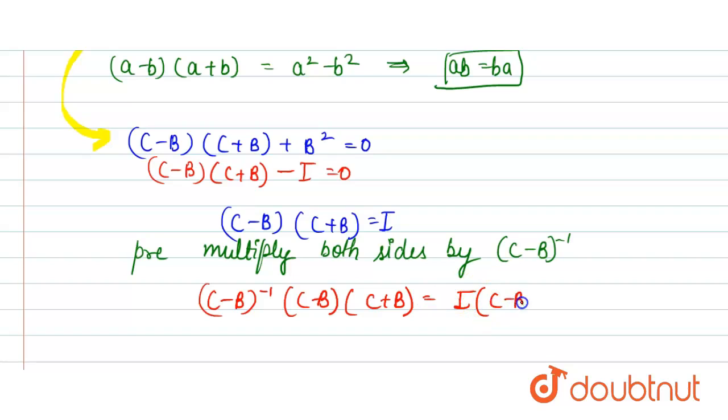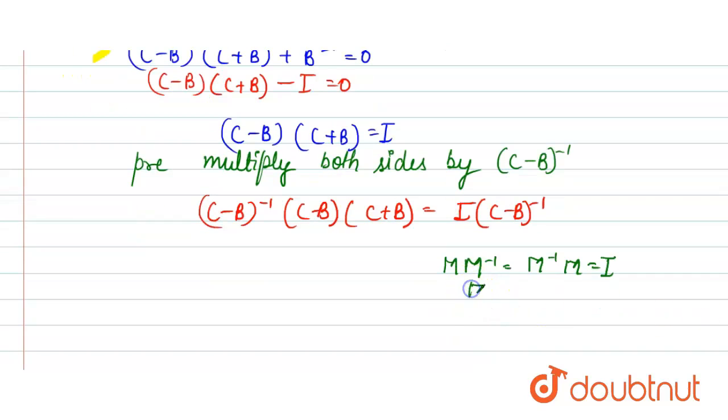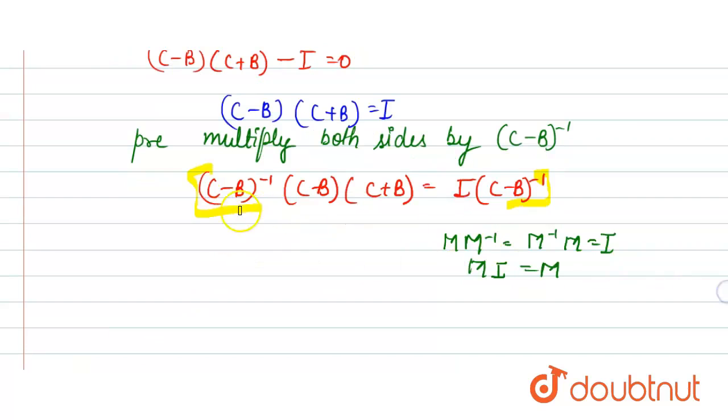And we know that M into M inverse is equal to M inverse into M is equal to I, and here M into I, that is identity matrix, is equal to M. So here if we apply this in this expression, so here in place of these two, by using this we can write it here I.